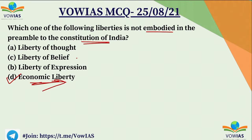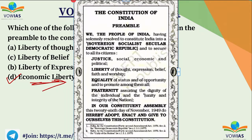Now we will see what things are mentioned in the preamble. From the examination point of view, you have to remember this document as it is. One more important thing we need to remember is that in 1976, under the 42nd Constitutional Amendment Act, three words were added: secular, socialist and integrity.